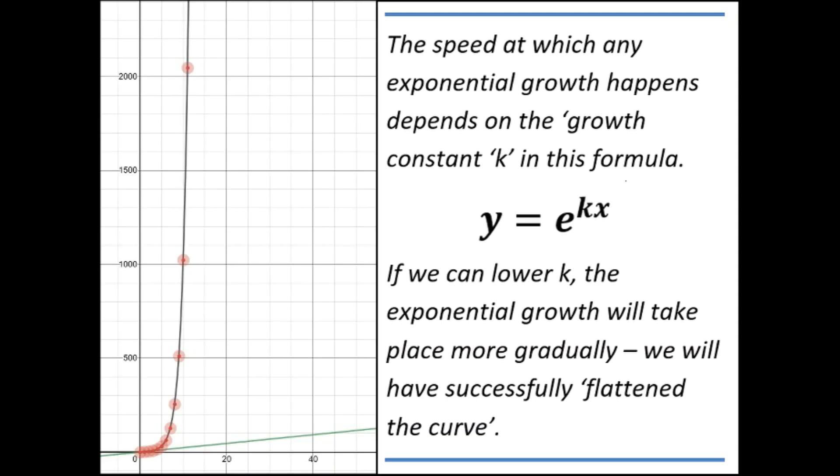As the previous section on further maths tried to explain, the rate at which an exponential growth goes upwards depends on a constant k, which I've called the growth constant. If you can lower the value of k, then the exponential growth will take place more gradually. The numbers won't go up quite so quickly. That's what people are talking about when they're saying we need to flatten the curve. They mean that we've got to lower the value of k, the growth constant.